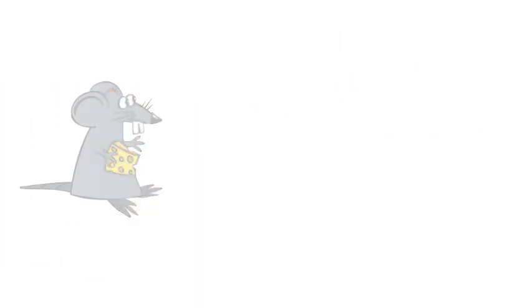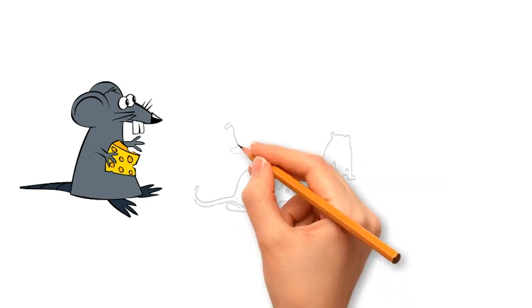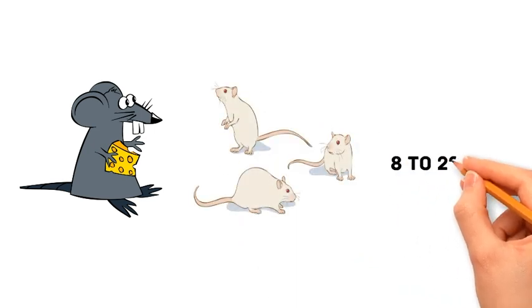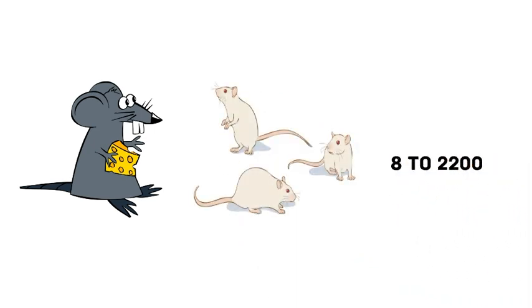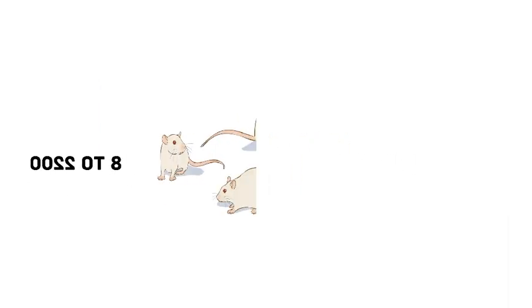Initially, the mouse population thrived. Within months, their numbers grew exponentially. The population soared from 8 to 2,200 mice, doubling roughly every 55 days.